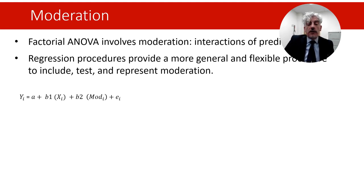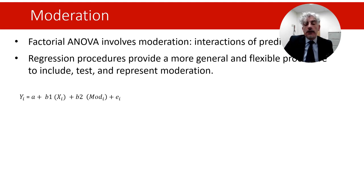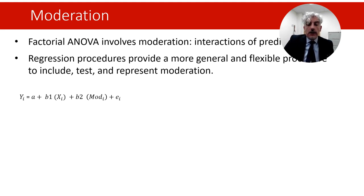I'll start with a standard regression model where the value of an outcome Y for individual i is the result of an intercept a, which represents the predicted value of Y when the other variables are equal to zero. Then we have a parameter B1 that represents the change in Y associated with a one unit increase in variable X. We also have an error term EY which represents the variation in Y scores not accounted for by the predictors.